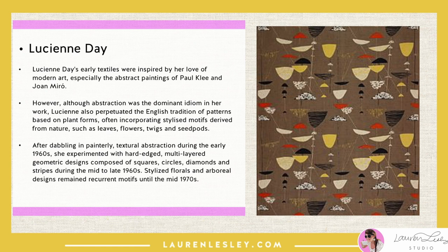Although abstractionism was dominant in her work, Lucian also perpetuated the English tradition of patterns based on plant forms, often incorporating stylized motifs derived from nature such as leaves, flowers, twigs, and seed pods. After dabbling in painterly textural abstraction during the 1960s, she experimented with hard-edged, multi-layered geometric designs composed of squares, circles, diamonds, and stripes — very geometric, very modern — during the mid-to-late 1960s.